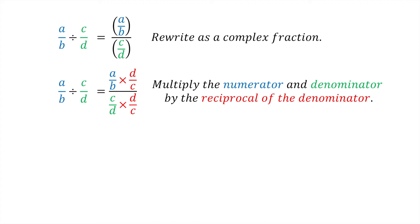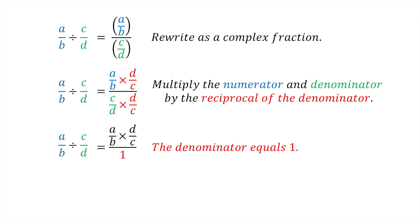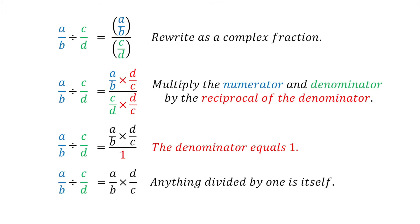Now this is beginning to look really complicated. However, notice that the denominator C divided by D multiplied by D divided by C equals 1. Finally, recall that any quantity divided by 1 is itself. So we now have A divided by B divided by C divided by D equals A divided by B times D divided by C. And there we have it — a fraction divided by another fraction is equivalent to multiplying the first fraction by the reciprocal of the second fraction.